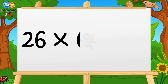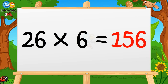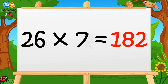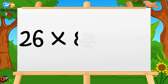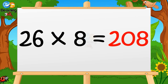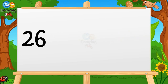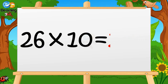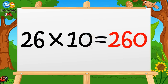26 sixes are 156. 26 sevens are 182. 26 eights are 208. 26 nines are 234. 26 tens are 260.